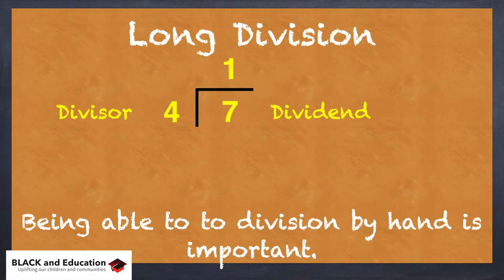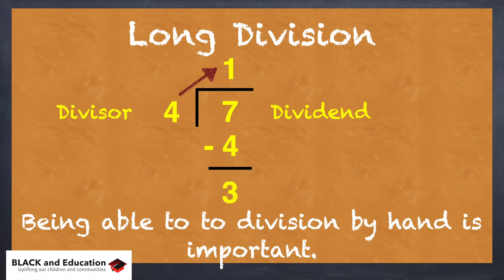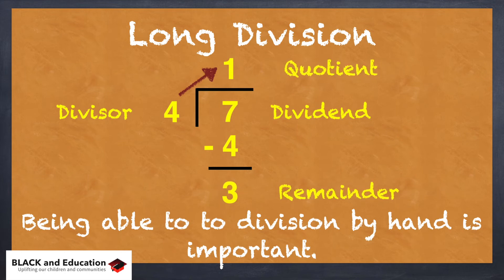The answer is 1. 4 can go into 7 one time, and 4 times 1 is 4. I bring that 4 down here and subtract: 7 minus 4 gives me 3. That gives me a remainder of 3, so the answer is 1 with a remainder of 3.